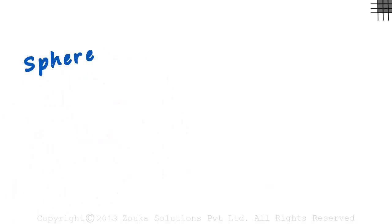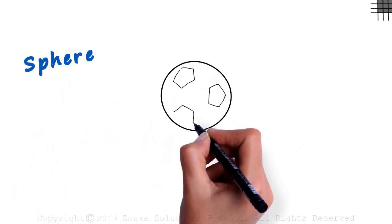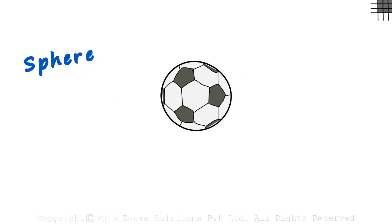What does a sphere look like? The best example would be a football. It's round in shape and has no vertices.